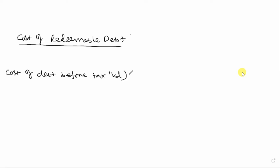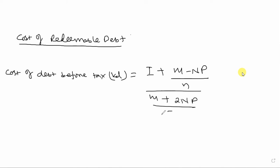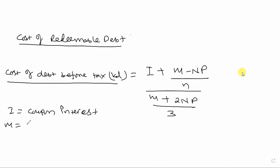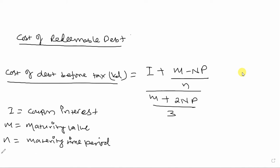The approximate formula for KD before tax is: KD equals coupon interest (I) plus M minus NP divided by N, all divided by M plus 2NP divided by 3. Here I is the coupon interest and M is the maturity value, and NP is the net proceeds.